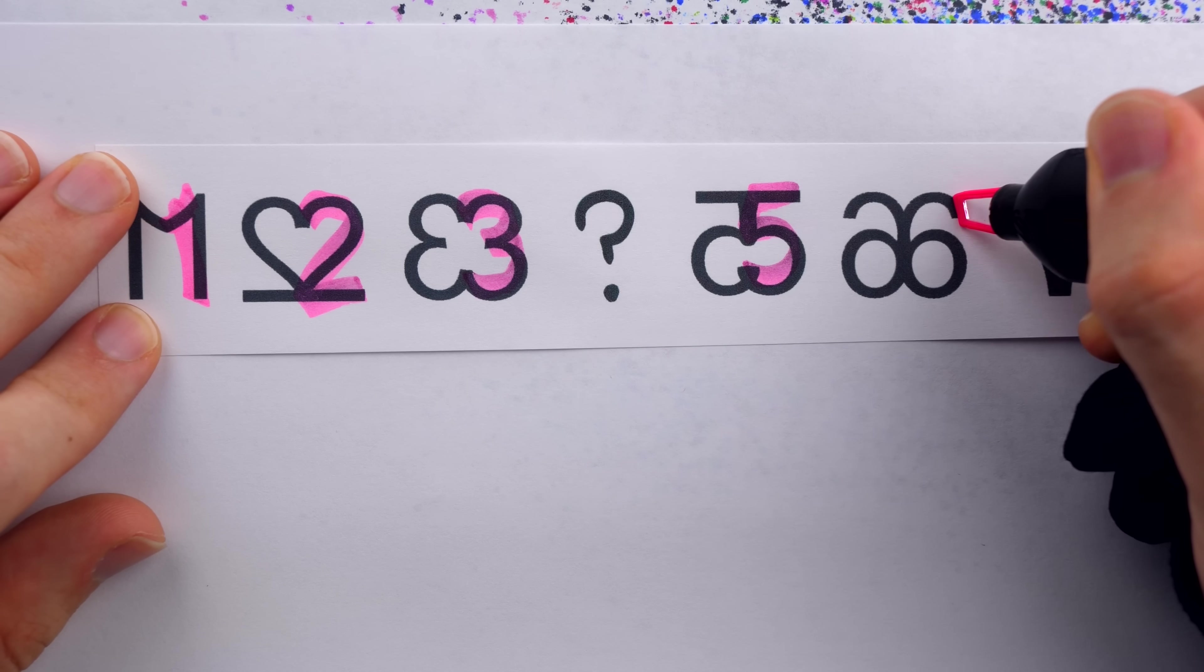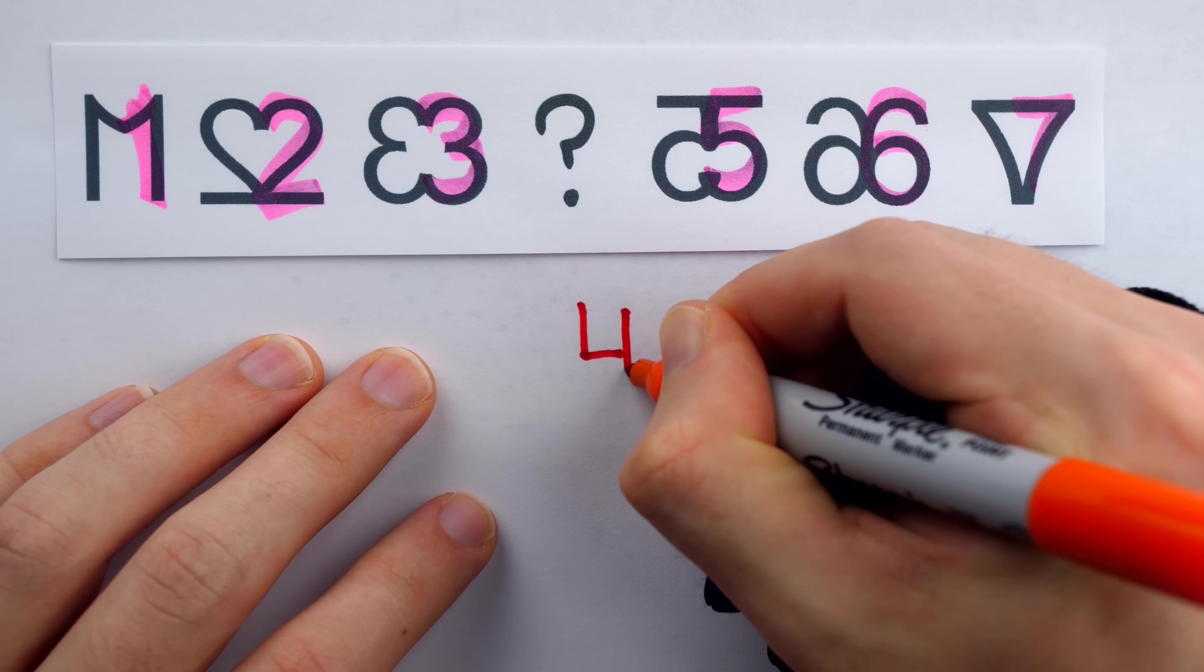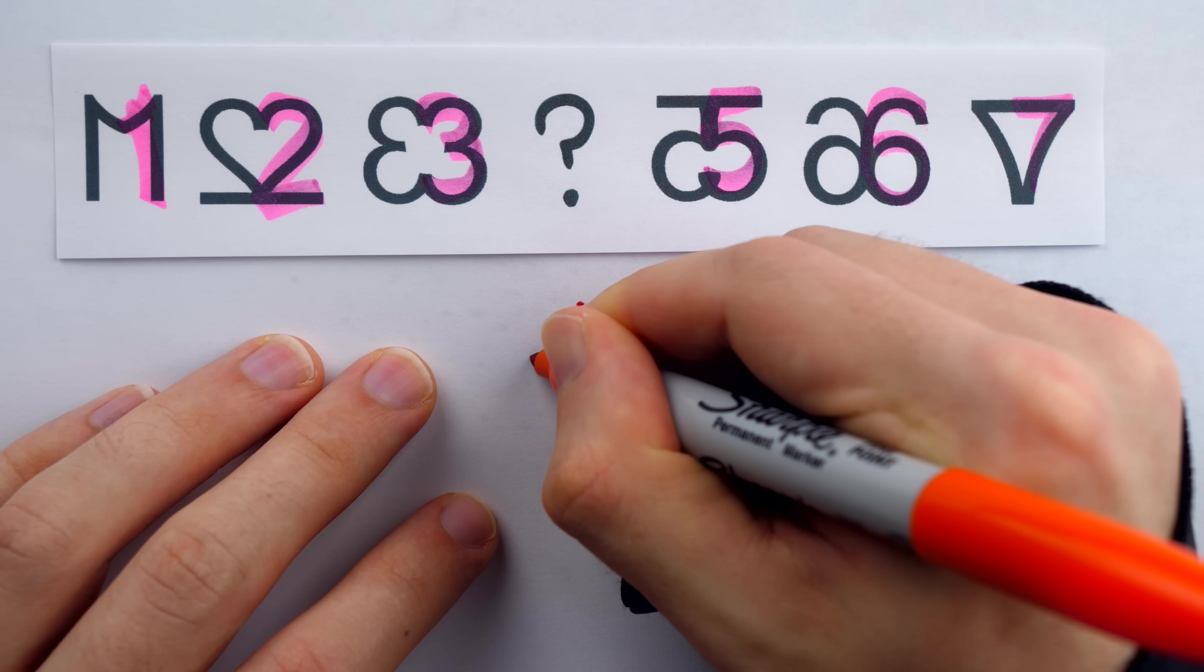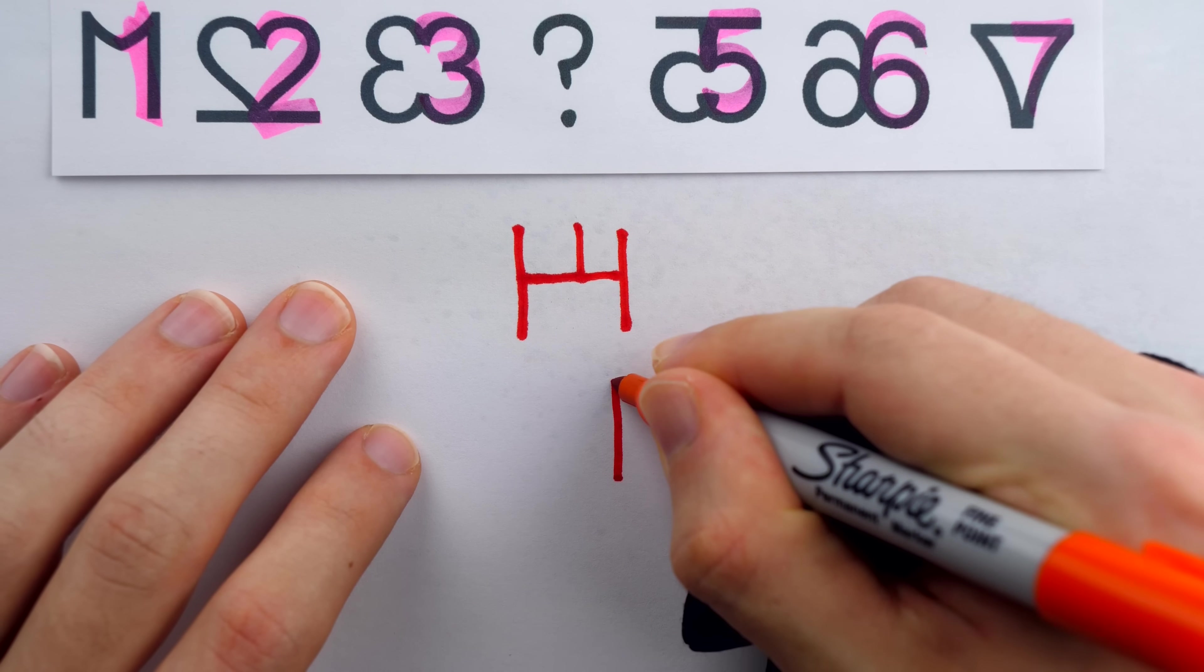1, 2, 3, 5, 6, 7. So the missing figure here should be 4, and then reflected across a vertical axis, just like that. Or like this, depending on how you write your 4s.